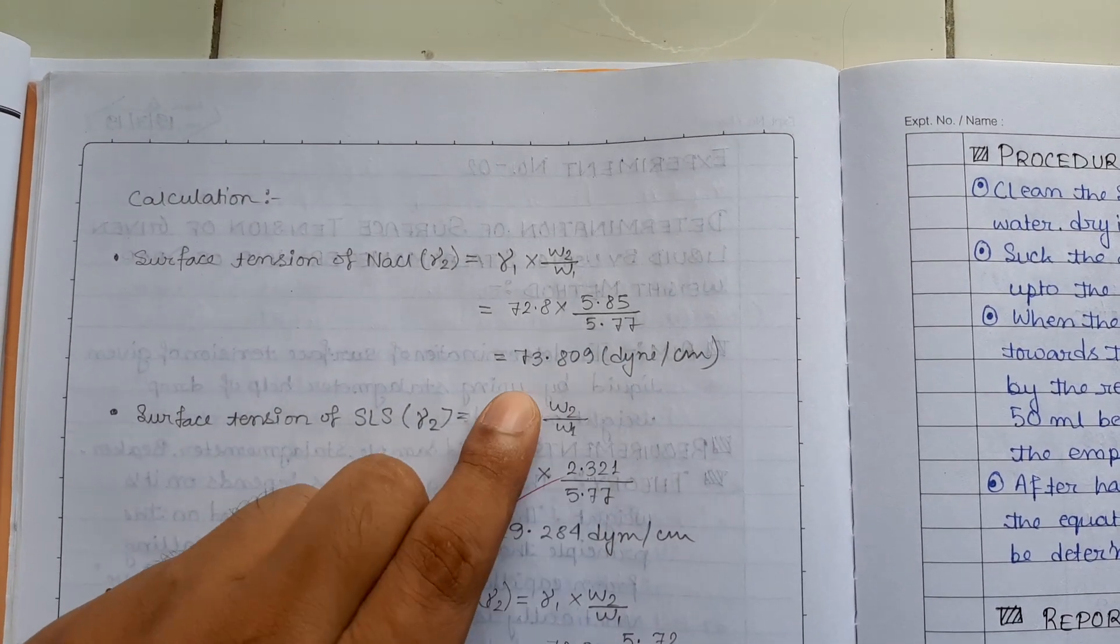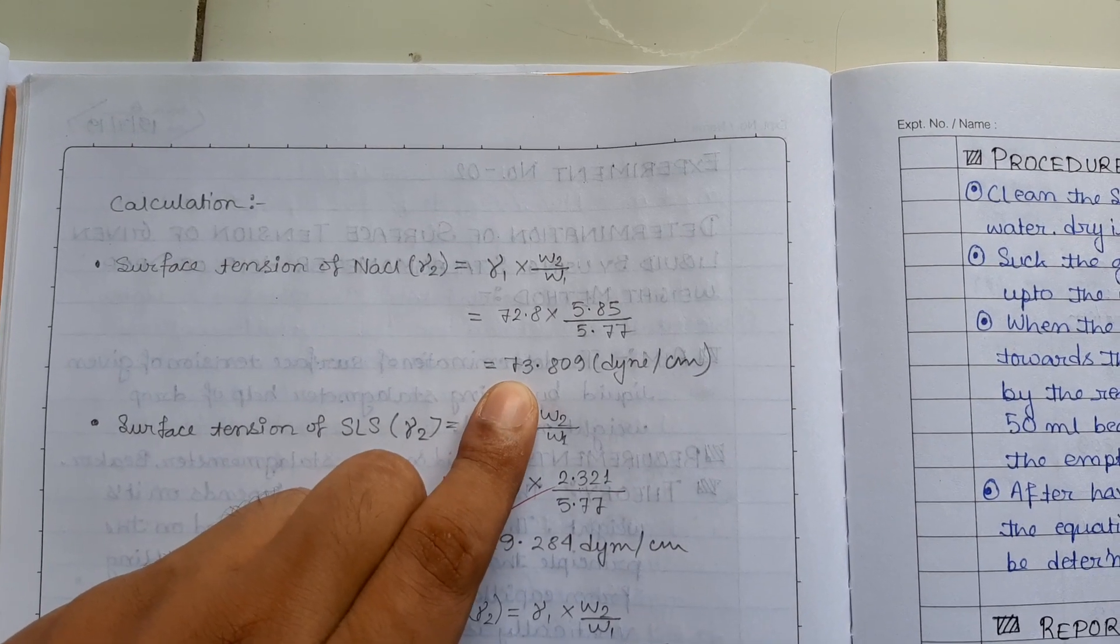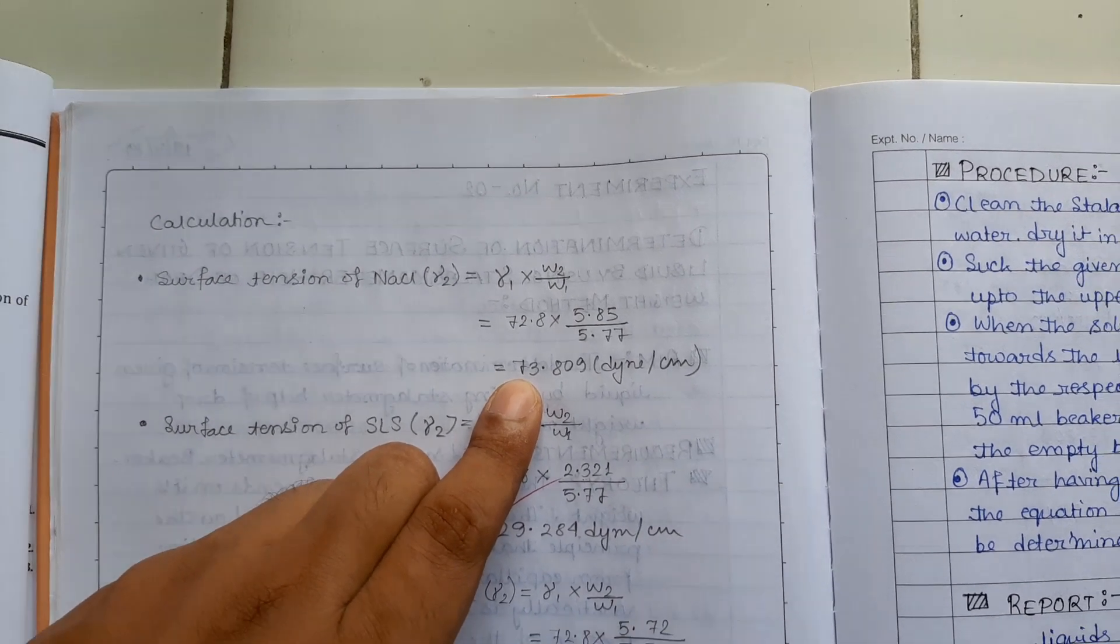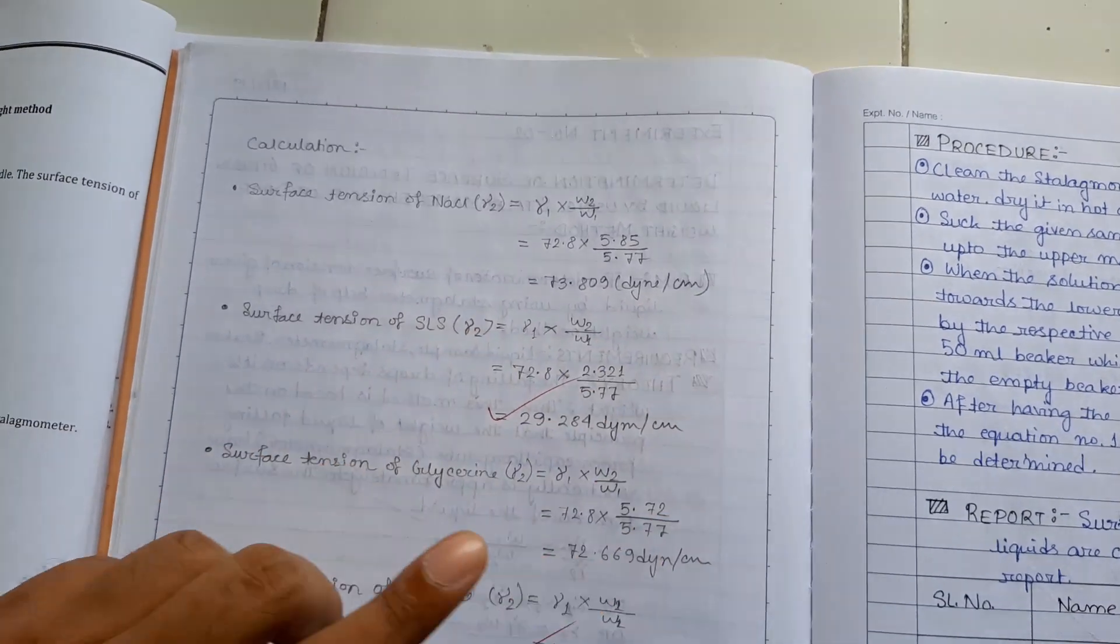So, very simple. By calculating, the value is, after calculation, you got the value 73.809 dyne per centimeter.